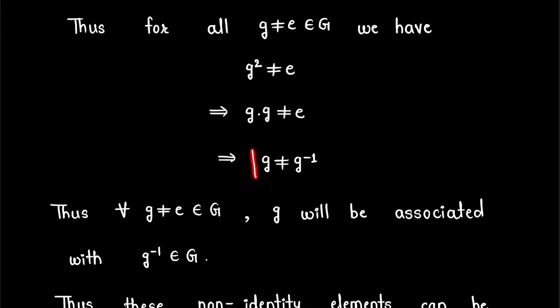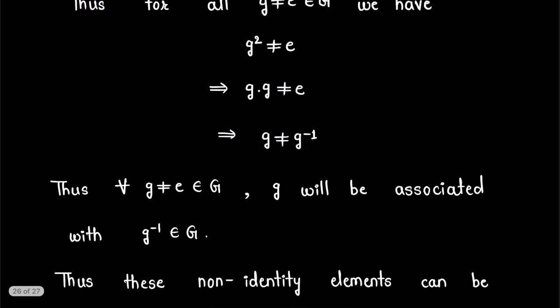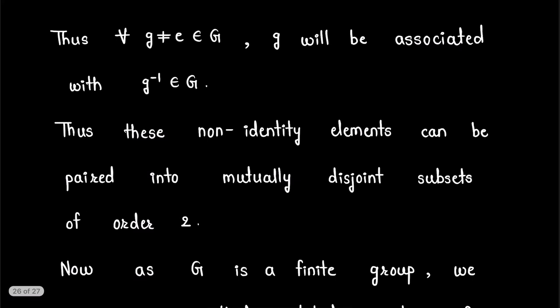That means for every non-identity element g in group G, that element is not equal to its inverse. Thus for all g ≠ e in G, g will be associated with its inverse g⁻¹ in G.